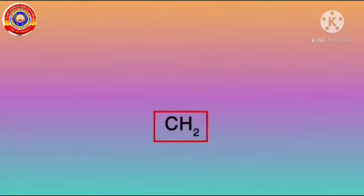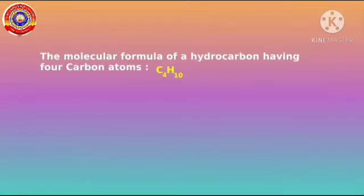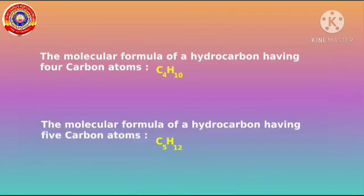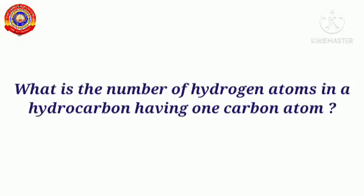The difference in the number of carbon and hydrogen atoms in the molecular formula is CH₂. The molecular formula of a hydrocarbon having five carbon atoms is C₅H₁₂. Shall we deduce a general formula for the category alkanes? What is the number of hydrogen atoms in a hydrocarbon having one carbon atom?